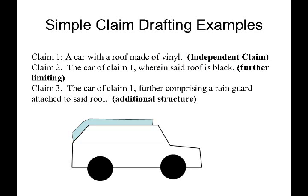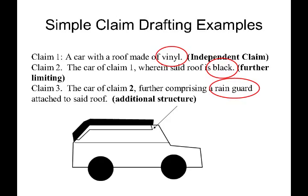Furthermore, in addition to further limiting an invention, a dependent claim can include additional structure not present in the independent claim. Claim 3 includes a rain guard attached to the roof — a thin rail that goes along the roof edge to keep water from dripping into slightly opened windows. Since claim 3 comes from claim 1, which says the roof is vinyl but doesn't specify color, claim 3 is drawn to a car with a vinyl roof of any color including the rain guard. To make an even more limiting claim, we could have claim 3 depend from claim 2, which depends from claim 1. Then claim 3 would have the limitations of claim 1 (roof is vinyl), claim 2 (roof is black), and claim 3 itself (rain guard included).